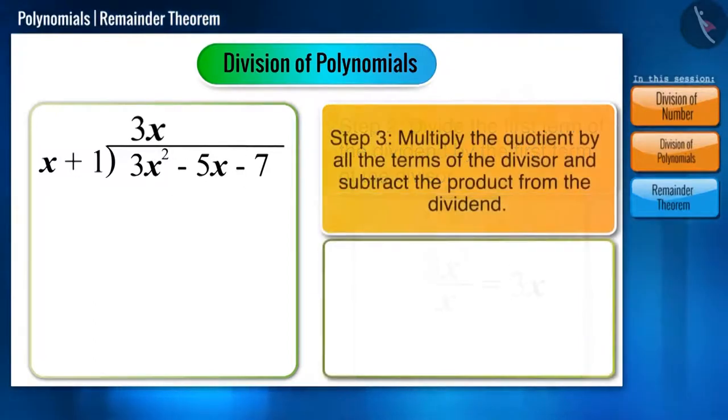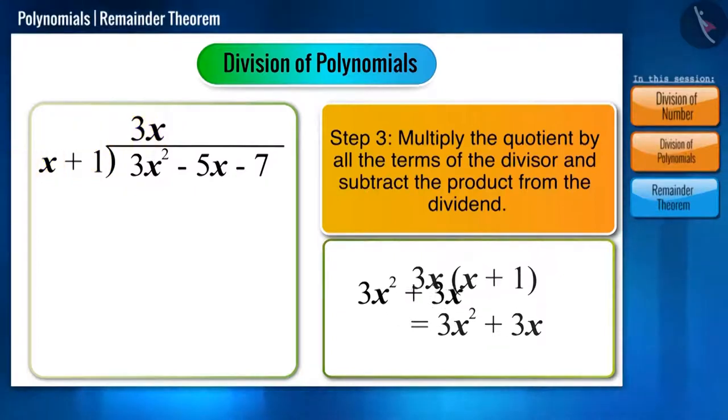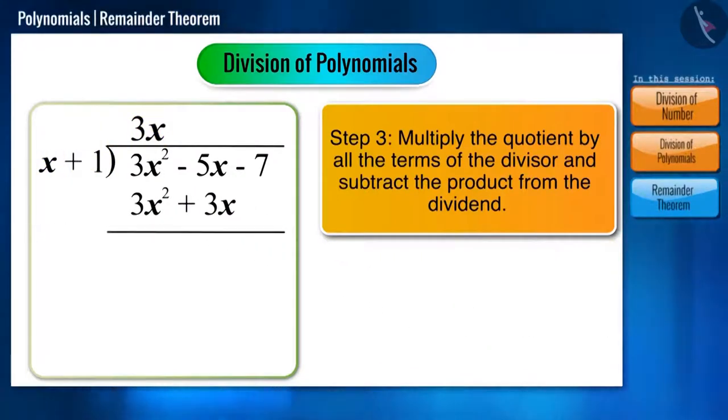Now, place 3x in the quotient and multiply 3x by all the terms of the divisor. Now, we get plus 3x squared plus 3x, which we will write here and subtract just like we do with numbers.